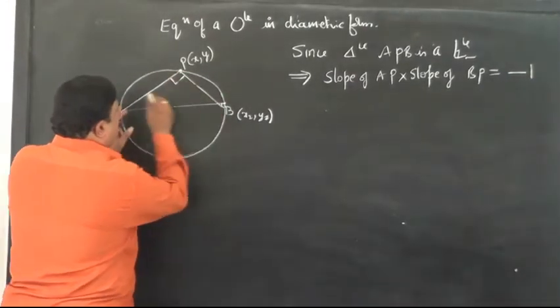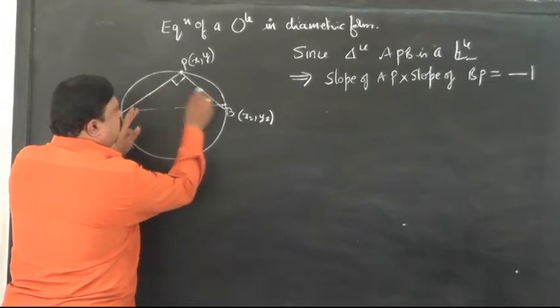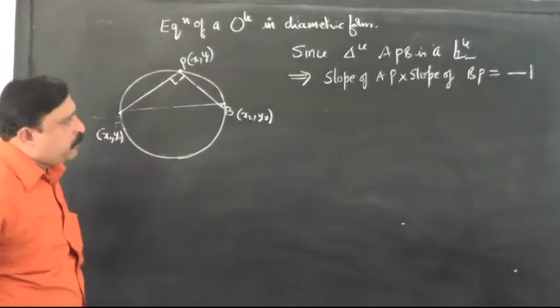AP is perpendicular to BP, therefore if you multiply the product of the slopes of these two lines, you should get negative 1.